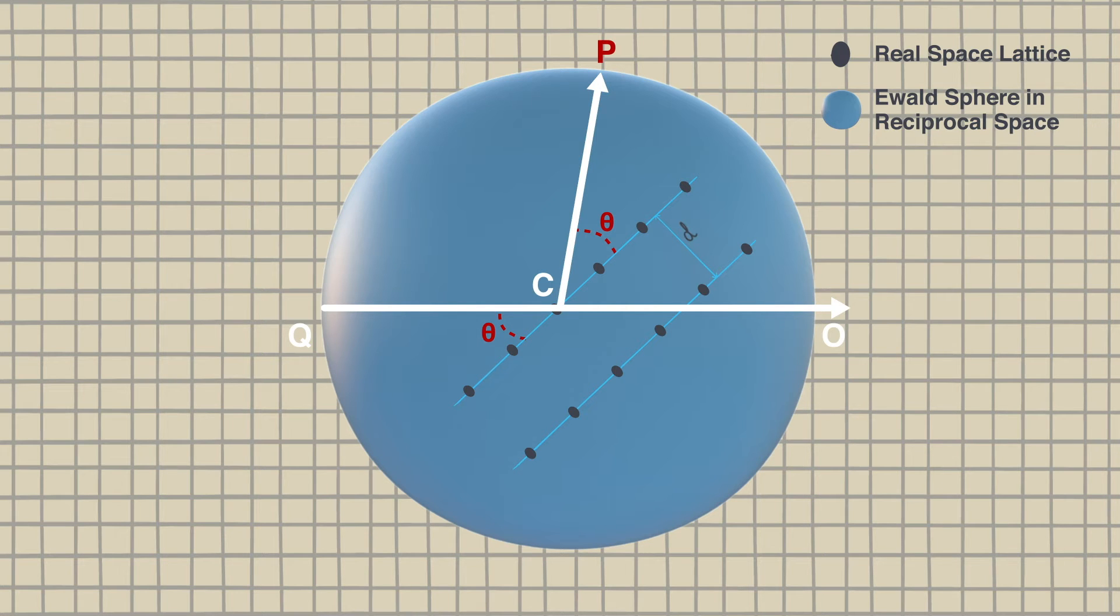Now if we draw some imaginary lines to connect point Q to P and O to P we have a triangle. Basic geometry would tell us that angle PQO is also theta. Now for some basic trigonometry.